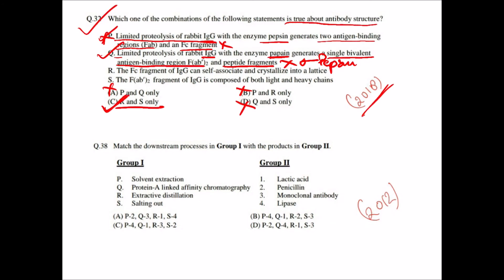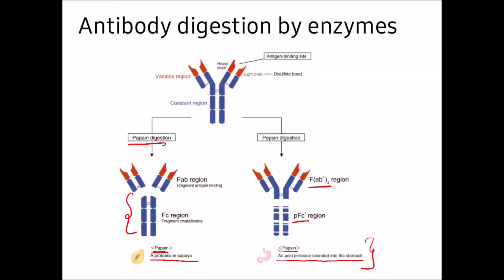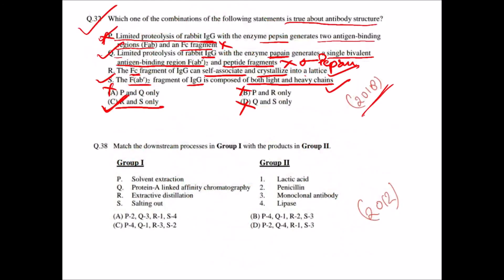The correct answer is option C. The Fc fragment of IgG can self-associate and crystallize into a lattice — this is true, as Fc stands for fragment crystallizable. The F(ab')2 fragment of IgG is composed of both light chain and heavy chain — also true, since the F(ab')2 structure contains both the light chain and the heavy chain portion. Both statements in option C are correct.